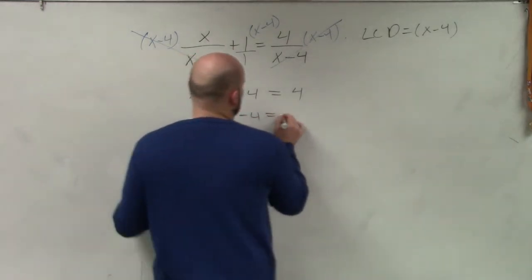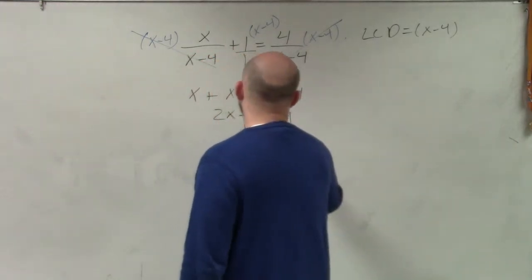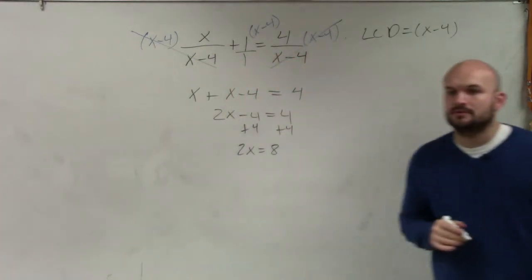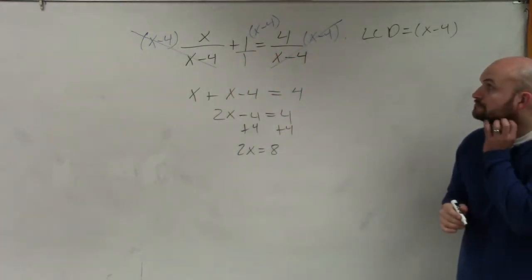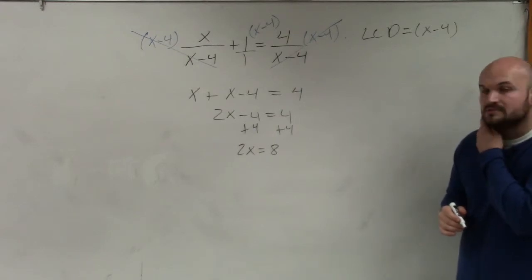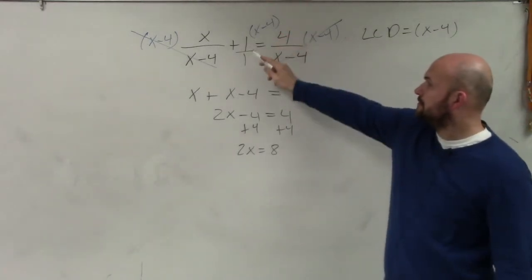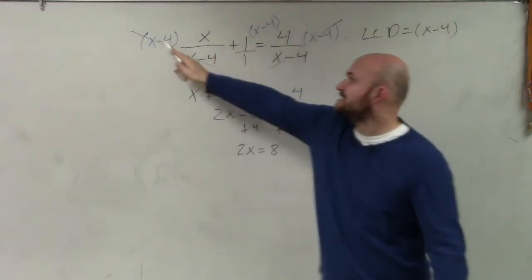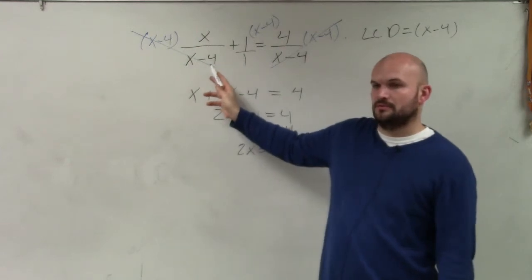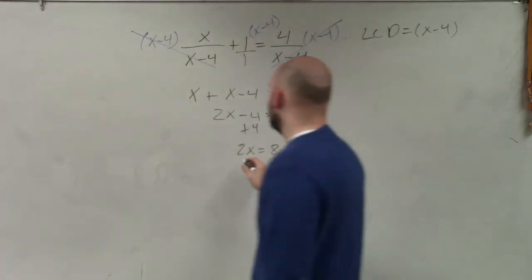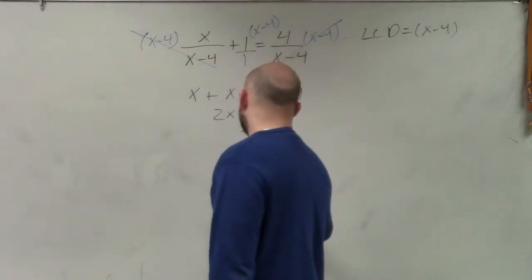2x minus 4 equals 4. Add 4, add 4. 2x equals 8. Why would you add the numerator times? 2x equals 4. Sorry? Why would you multiply the numerator times x minus 4? The numerator times x minus 4. I did. No, the first one. Here? Yeah. Because these divide to 1. Right? They divide out, so you don't have to multiply. Now I divide by 2, and I get x equals 4.